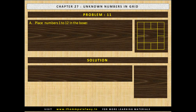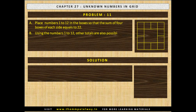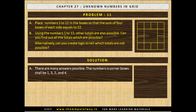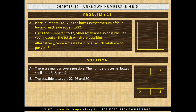Problem 11. A. Place numbers 1 to 12 in the boxes so that the sum of 4 boxes on each side equals 22. B. Using the numbers 1 to 12, other totals are also possible — can you find all the totals which are possible? Alternatively, can you create logic to tell which totals are not possible? Now stop the video and solve the problem. The solution is shown. A: there are many answers possible; the numbers in the corner boxes shall be 1, 3, 2 and 4. B: the possible totals are 22, 26 and 30; other totals are not possible.